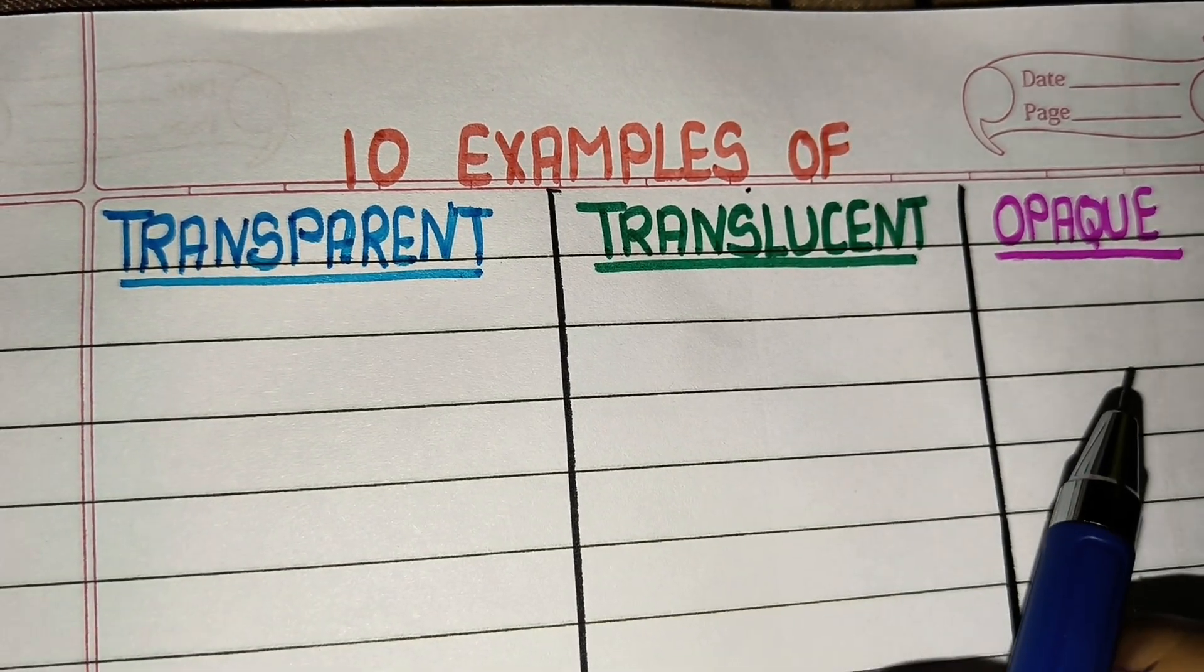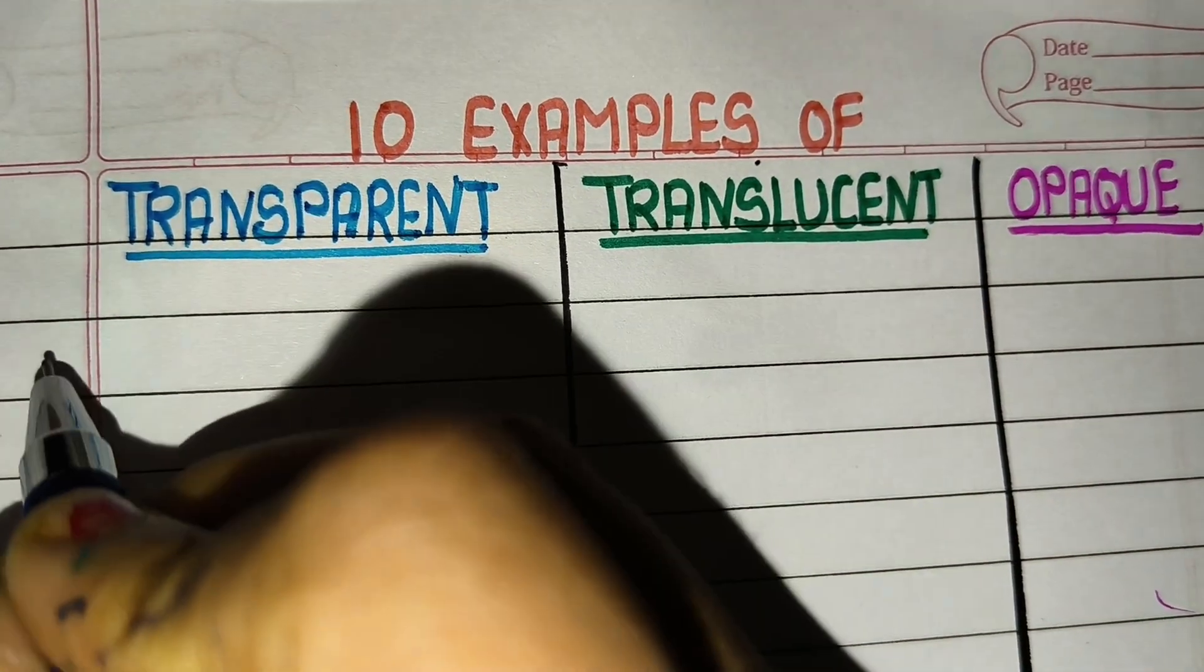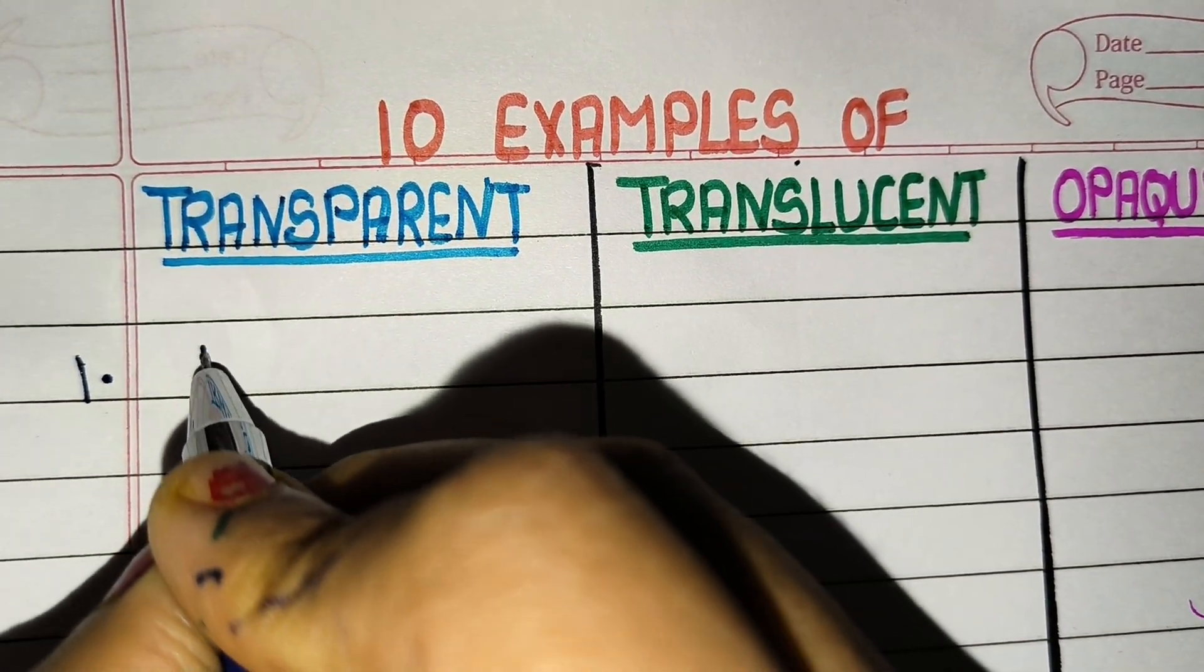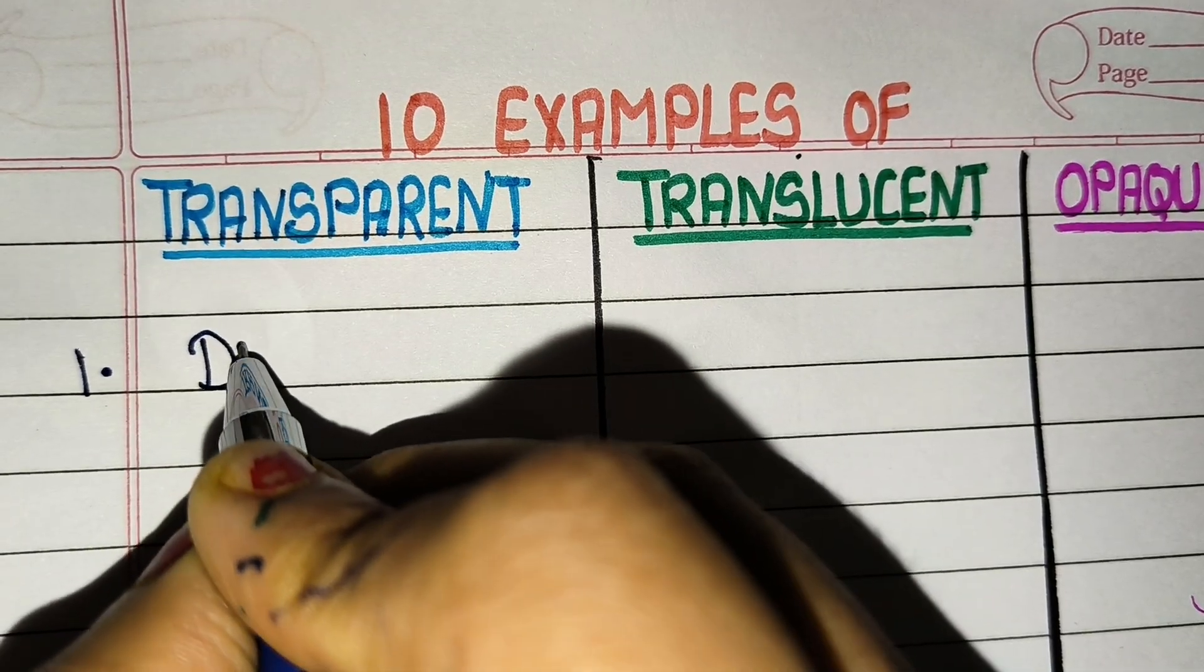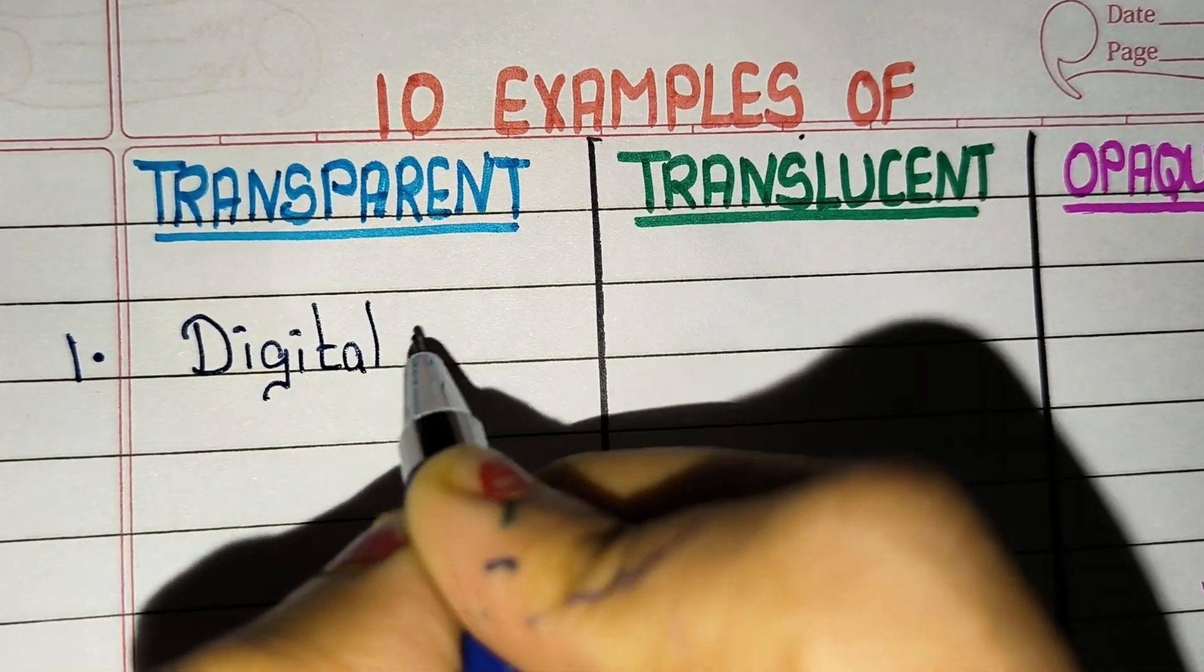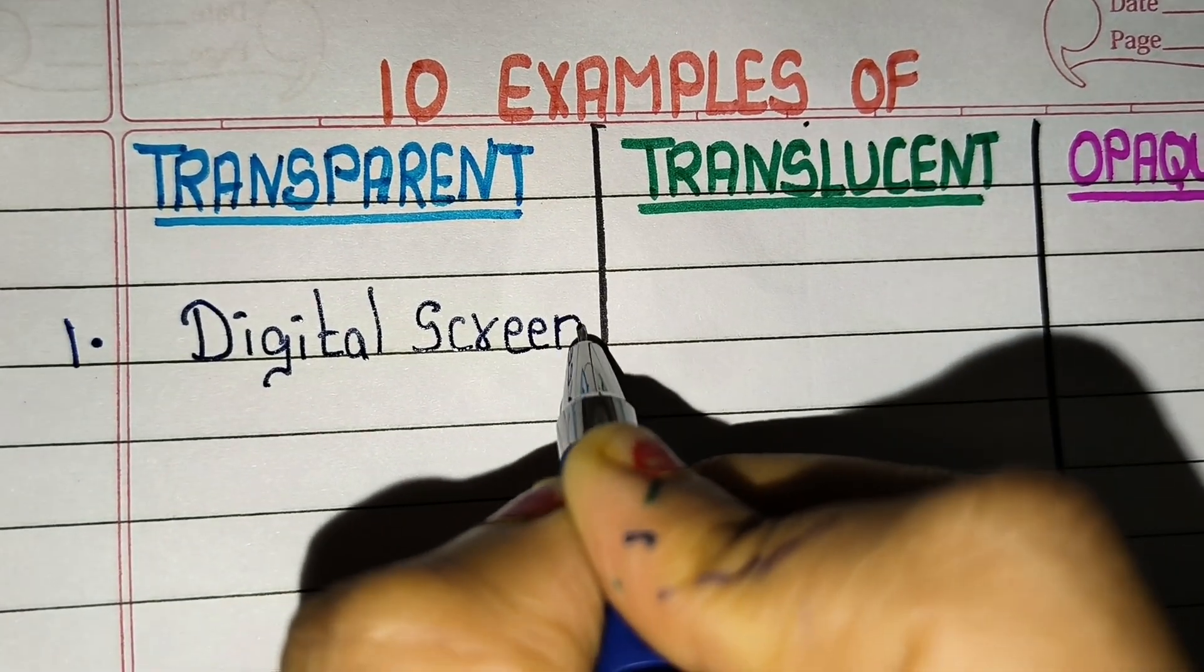What is transparent? The material through which light passes is said to be transparent. Translucent is the material through which light passes partially. Opaque means the material through which light does not pass.